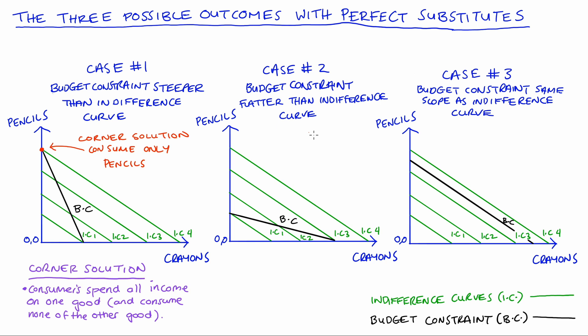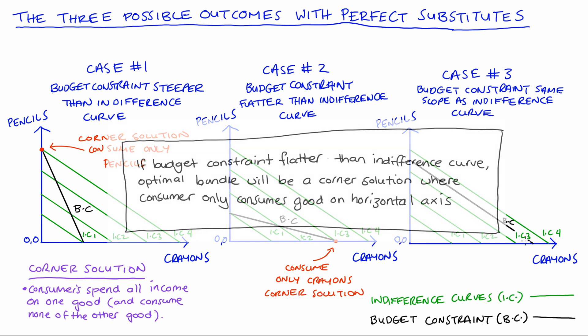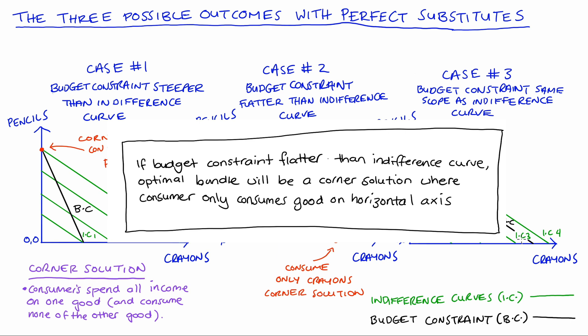In case two, we have the opposite situation. We still have a corner solution, but the highest indifference curve reachable given the budget constraint will be IC3. At the point where the budget constraint meets that indifference curve, consumers are only consuming crayons — another corner solution. In general, if the budget constraint is flatter than the indifference curves, the optimal bundle is a corner solution where the consumer only consumes the good on the horizontal axis and none of the good on the vertical axis.